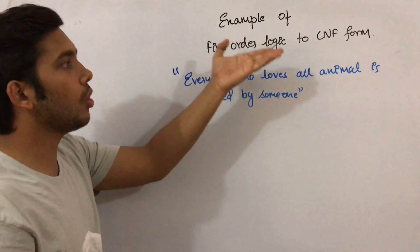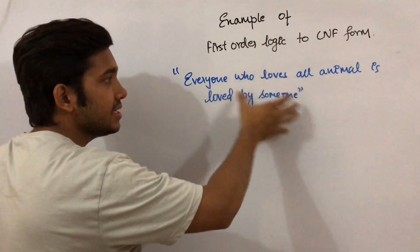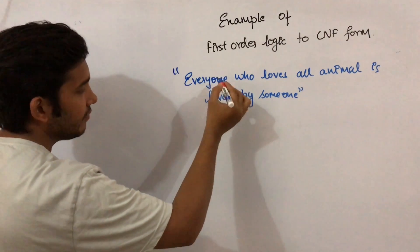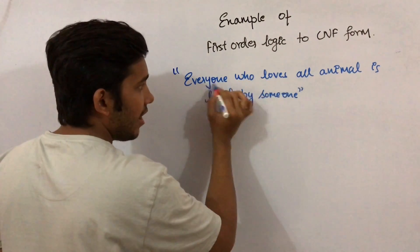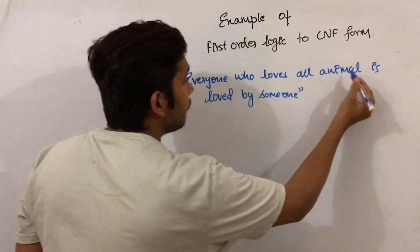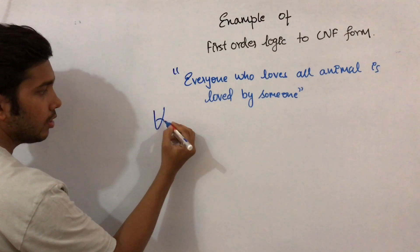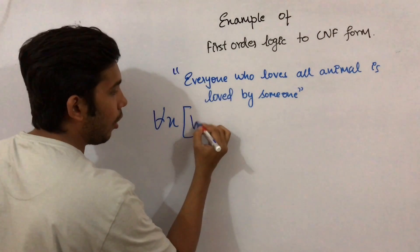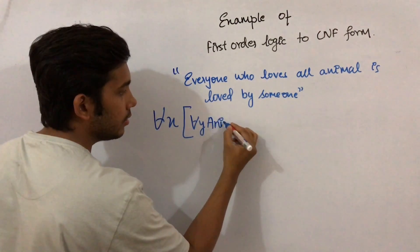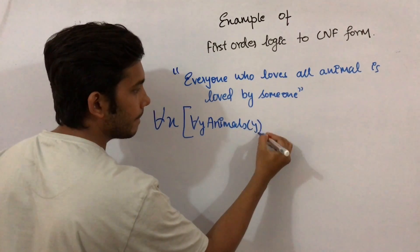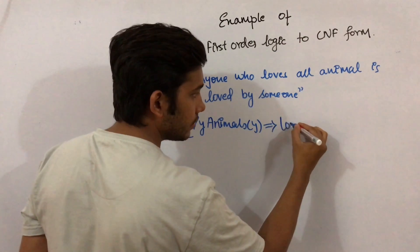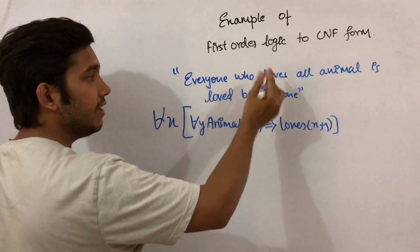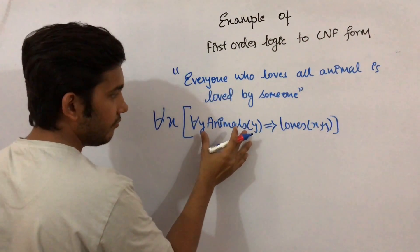So how are we going to write this statement into predicate logic? There are two variables: first, 'everyone,' which we can represent with X, and second, 'all animals,' which we can represent with Y. We write: for all X (for everyone), for all Y (for all animals) — this covers the first part, 'everyone who loves all animals,' which implies loves.